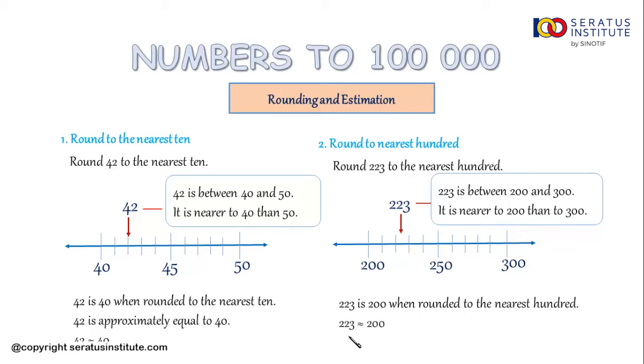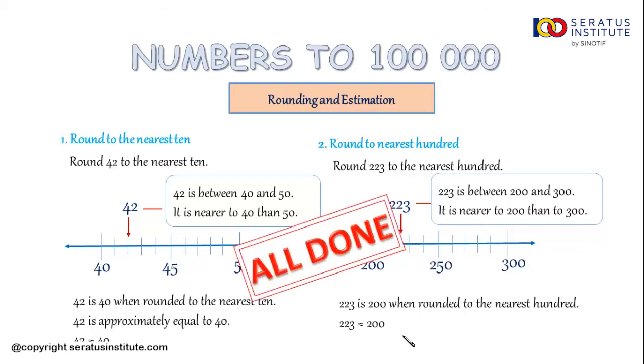From this we can conclude that 223 is 200 when rounded to the nearest 100. So 223 is approximately equal to 200. All done for the two main points.